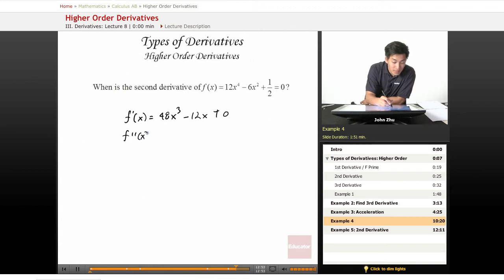f double prime of x equals 144x squared minus 12.